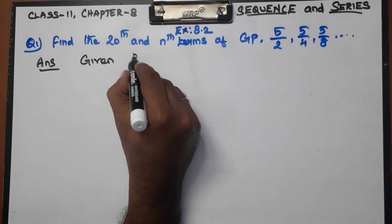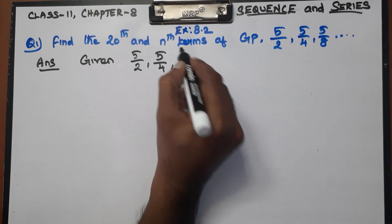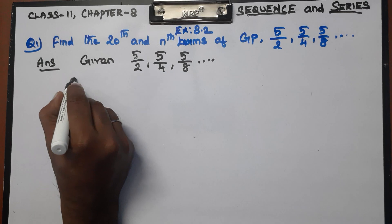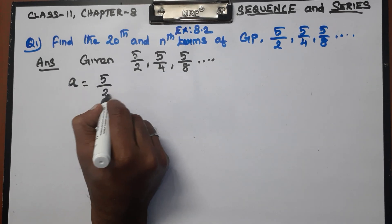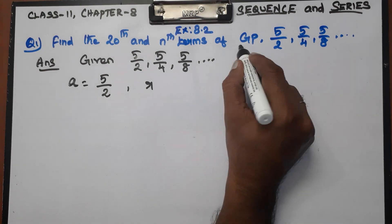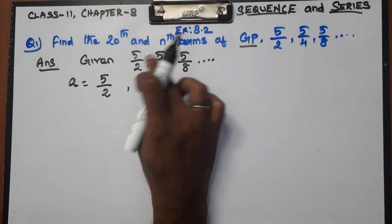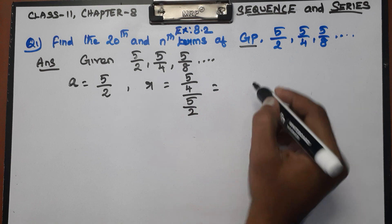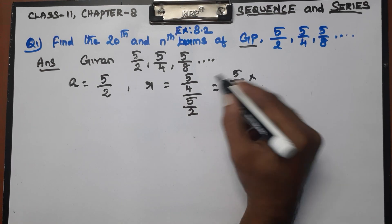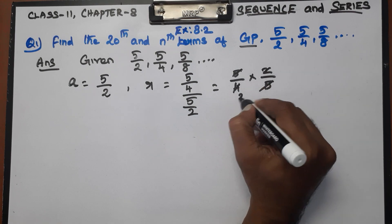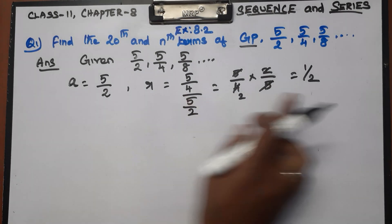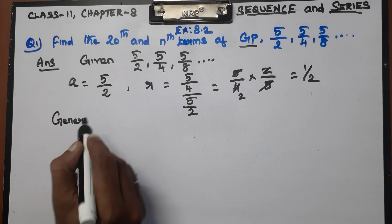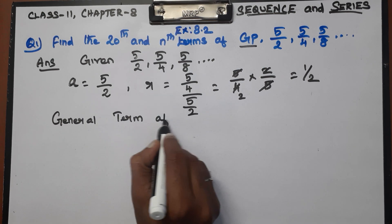The given sequence is 5/2, 5/4, 5/8. The first term a equals 5/2. The common ratio r equals the second term divided by the first term, which is 5/4 divided by 5/2. This gives us 5/4 times 2/5, which equals 1/2. So the common ratio is 1/2.